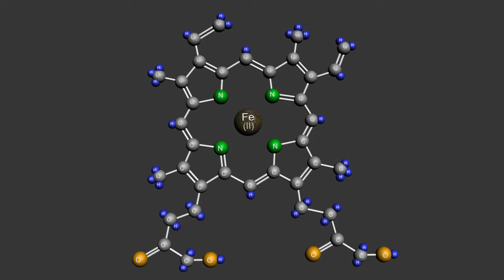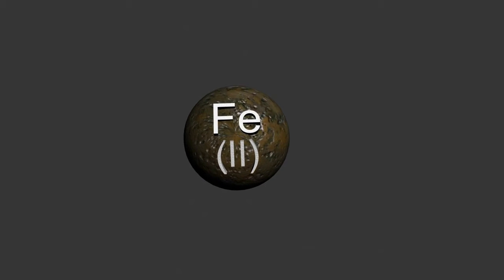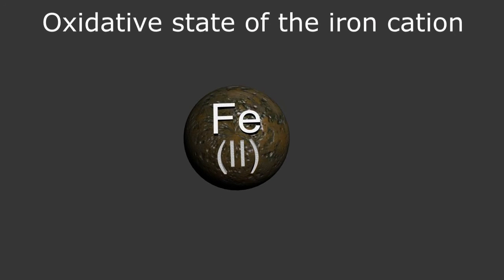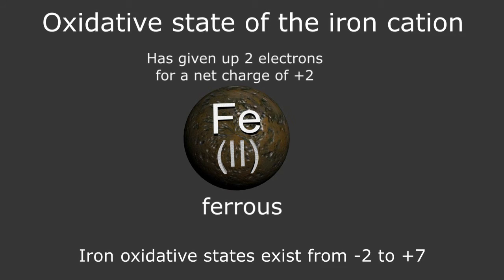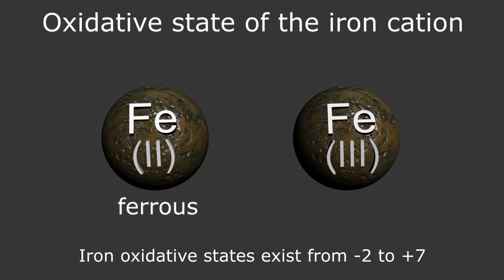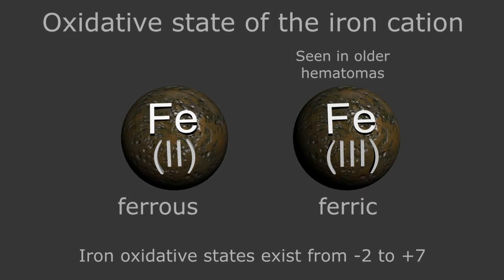Before we complete our molecule, let's take a closer look at this central iron atom. The Roman numeral 2 below the iron symbol represents the oxidative state of the iron cation of plus 2. This is the ferrous form of iron and is the configuration found in the normally functioning heme molecule. Iron can actually exist in multiple oxidative states from minus 2 to plus 7, but plus 2 and plus 3 are most common, with plus 3 representing the ferric form of the cation. This form of iron will be important when talking about the older hematomas in a moment.